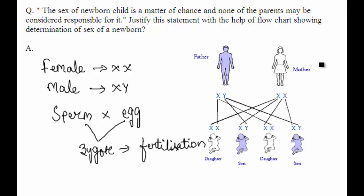The sex of newborn child is a matter of chance and none of the parents may be considered responsible for it. Justify this statement with the help of flowchart showing determination of sex of a newborn.